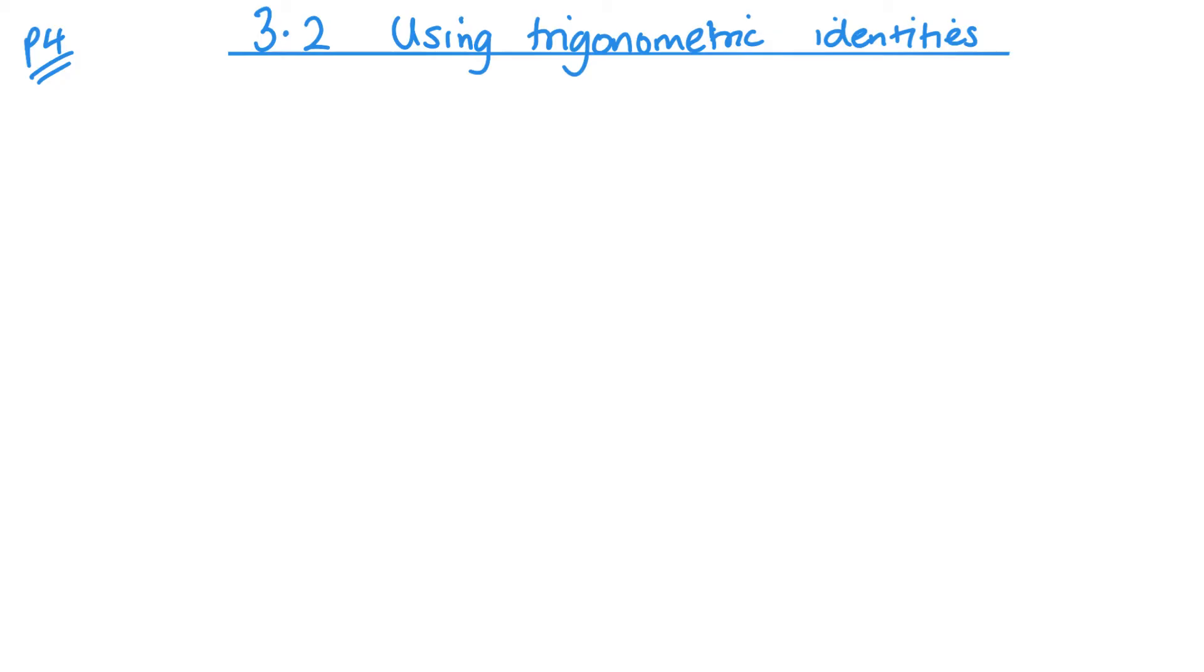Welcome back to P4. Today we are looking at using trigonometric identities within parametric equations. This is unit 3.2. To be able to do this, you're going to need to know a few of your identities.